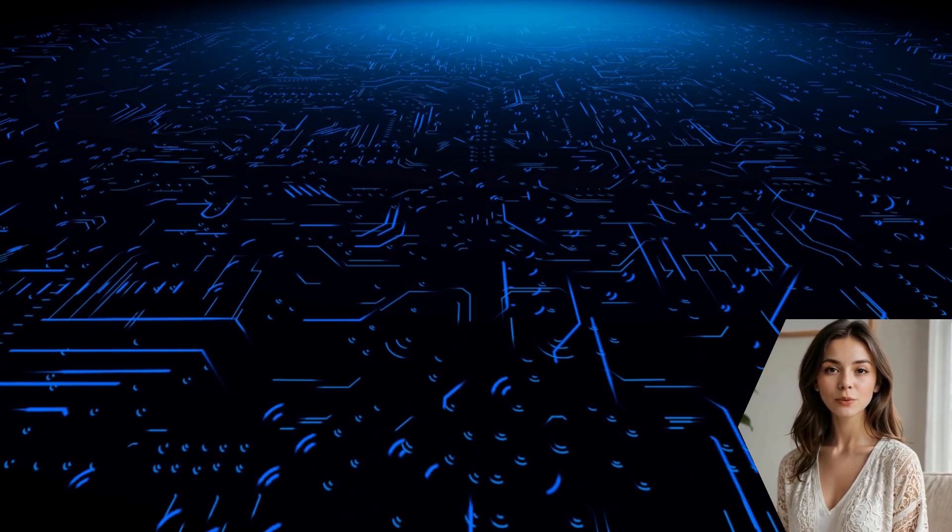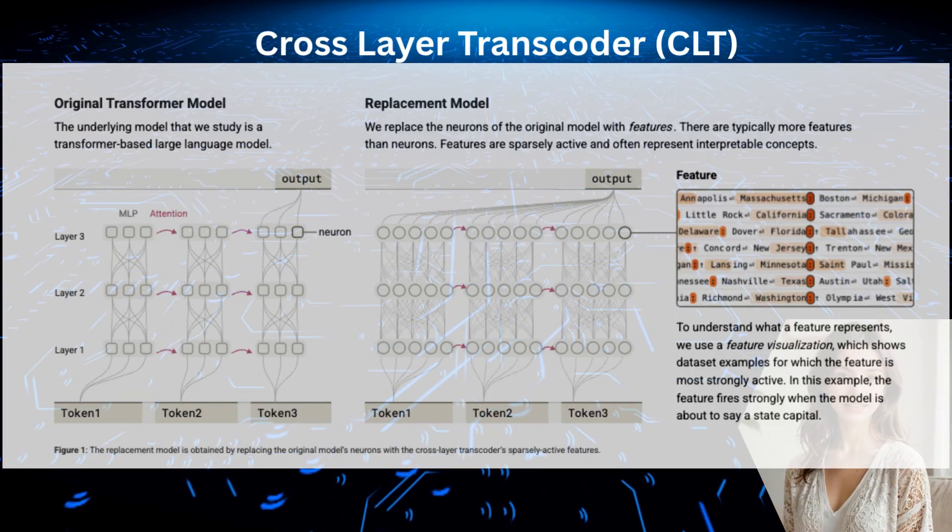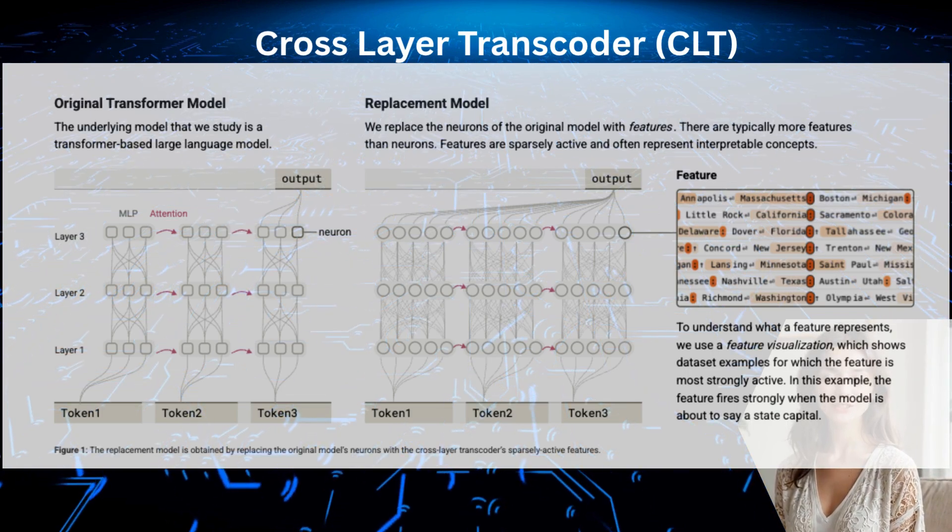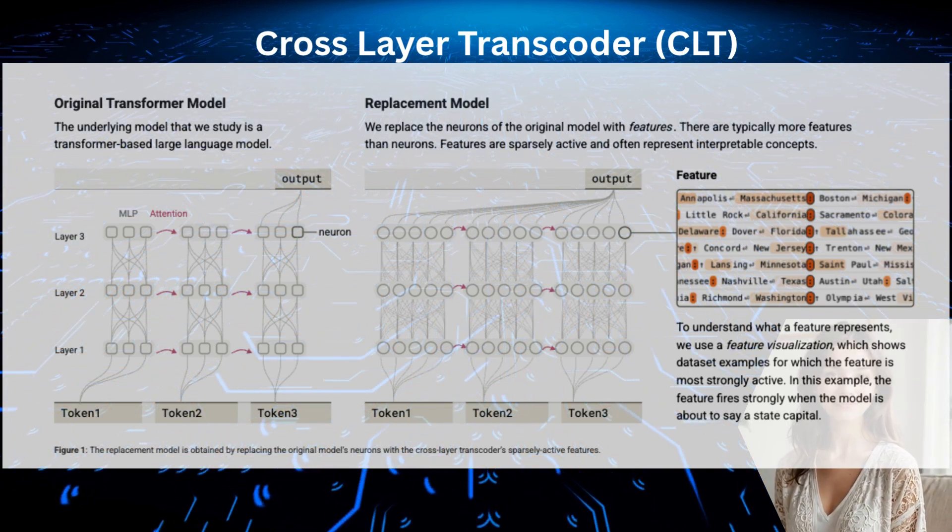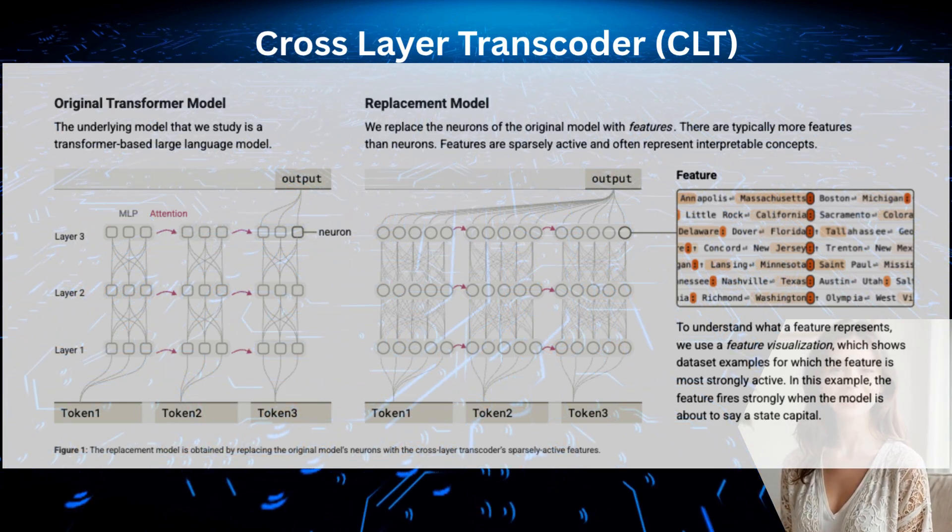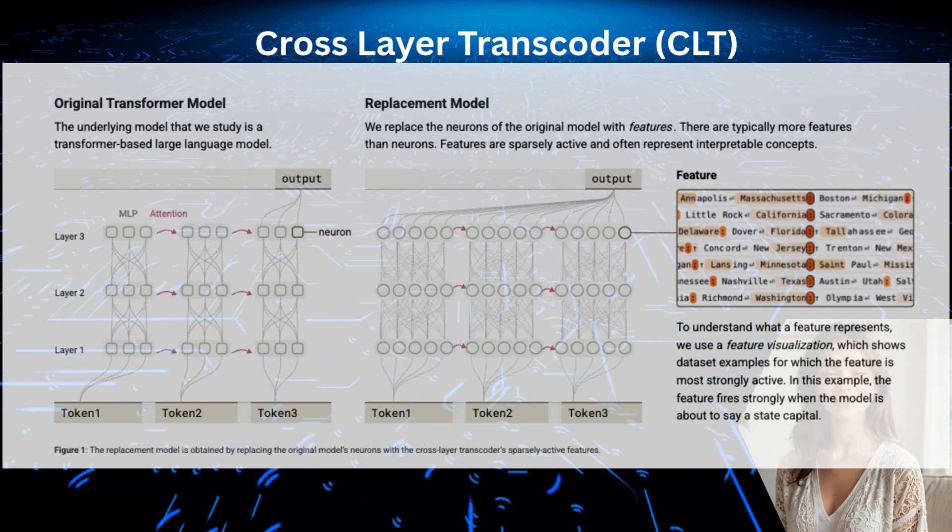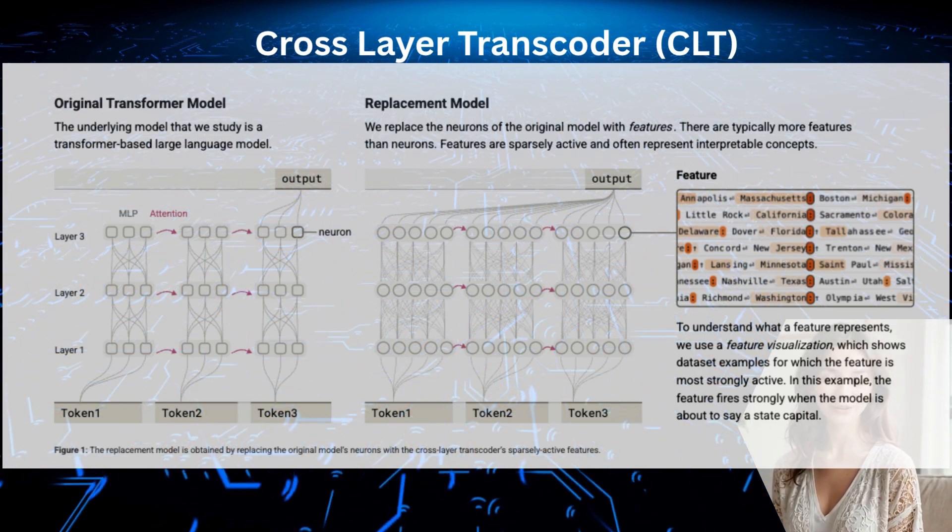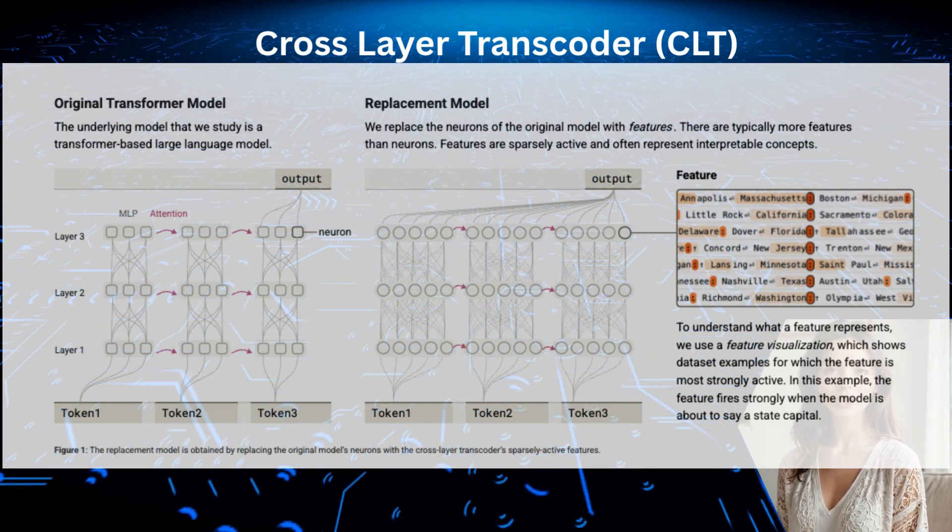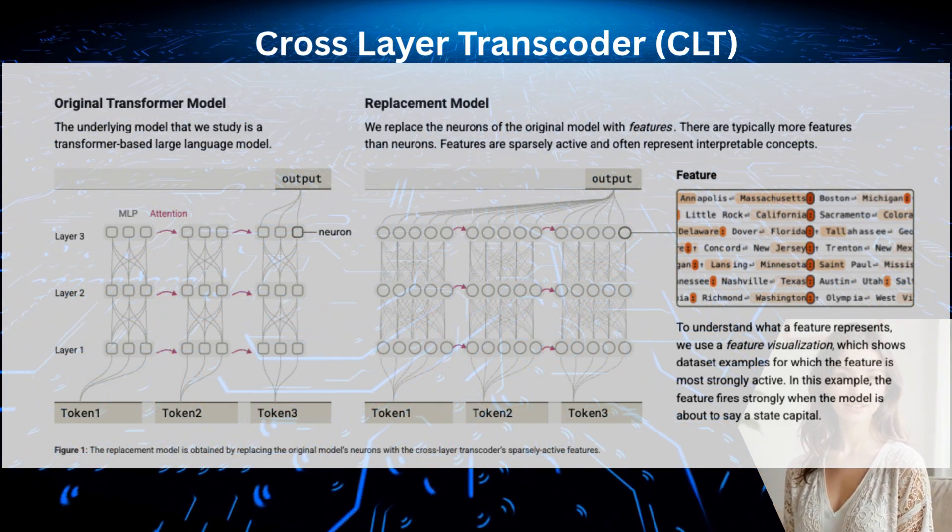They achieve this swap using a cross-layer transcoder, or CLT. You can think of a CLT as a specialized dictionary that learns to translate the complex activity of many neurons into the sparse, clean activity of features. In their study of the haiku model, they trained a CLT with a staggering 30 million features to choose from, giving them a rich, high-resolution vocabulary to describe the model's thoughts.